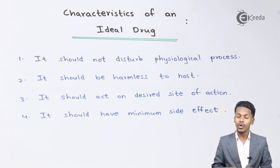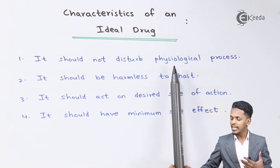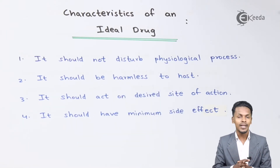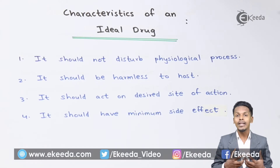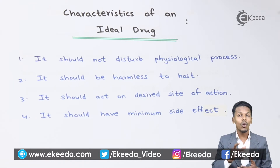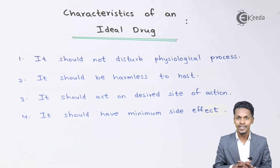The first characteristic is it should not disturb the physiological process. For example, if we consume a particular drug, it should not affect the other biological or physiological processes that take place in our body. It should always cure the disease and not affect the other physiological processes.